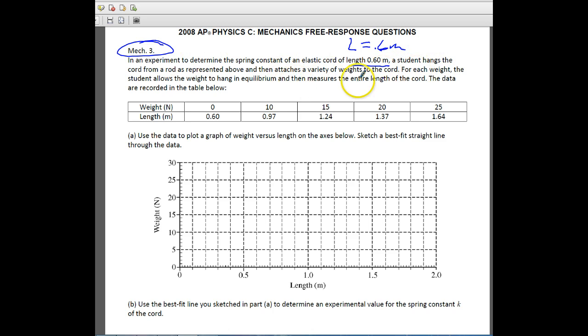A student hangs the cord and then attaches a bunch of different things to the cord. So you'll notice that when there's no weight on it, it's 0.6 meters. When there's 10 newtons of weight, it stretches to 0.97, then 1.24, and then just keeps going up. So we're going up by the same amount with weight, but our length is changing a little bit as we go.